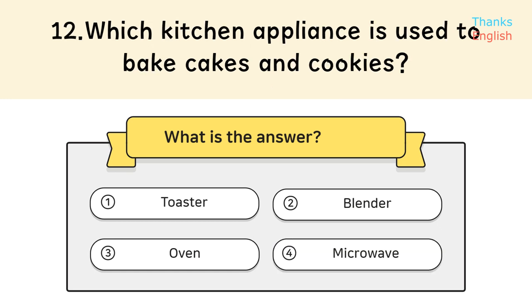Question 12: Which kitchen appliance is used to bake cakes and cookies? Answer 3: Oven.